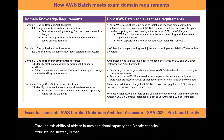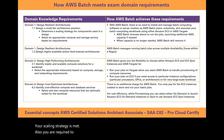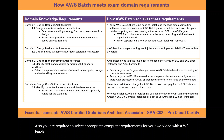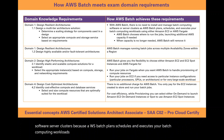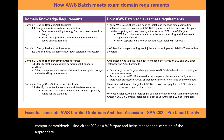You are also required to select appropriate compute requirements for your workload. With AWS Batch, you as the customer get freed from having to install and manage batch computing software or server clusters, because AWS Batch plans, schedules, and executes your batch computing workloads using either EC2 or AWS Fargate, and helps manage the selection of the appropriate compute requirements for your workload.